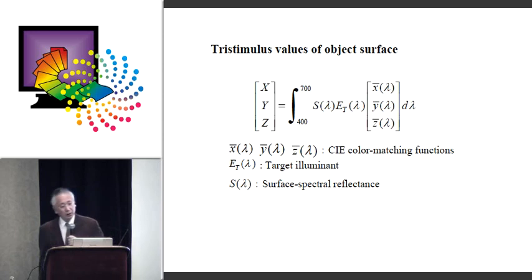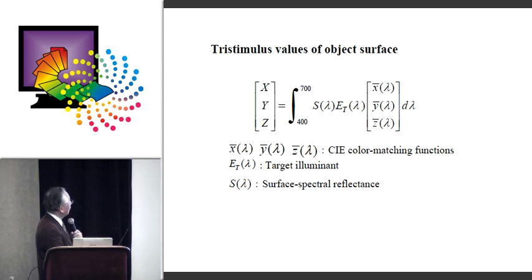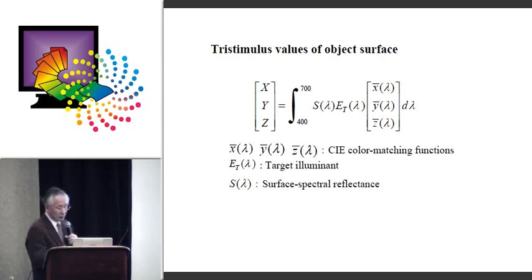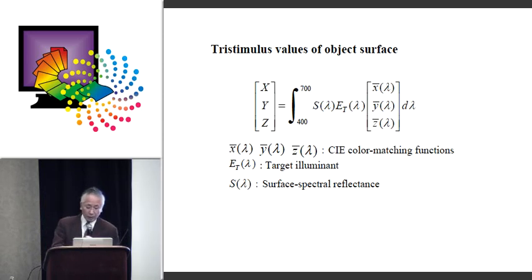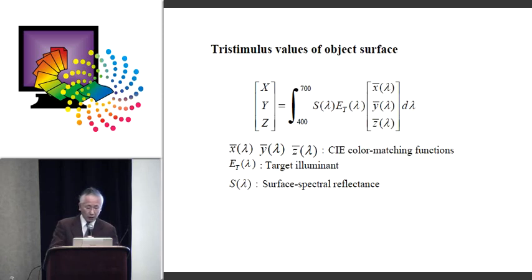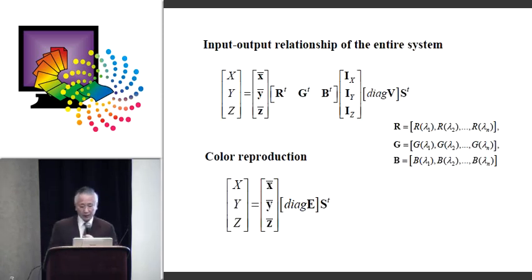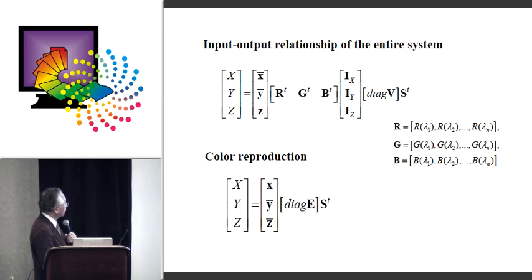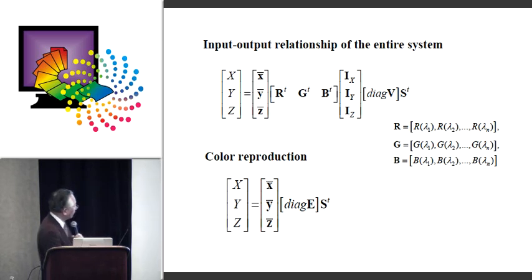On the other hand, the tristimulus color values of the same object surface, and the target illuminant IY, IZ, are described in this equation. So when we combine the two equations — the camera output and the display output — we have the input-output relationship of the entire system. All spectral functions are described as n-dimensional vectors.